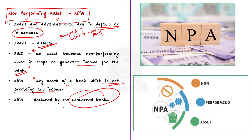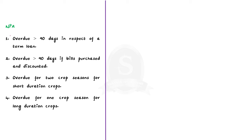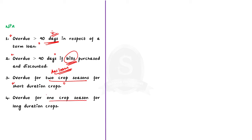As per the RBI, a non-performing asset is a loan where interest or installment of principal remains overdue for a period of more than 90 days in respect of term loans. Bills remaining overdue for a period of more than 90 days in case of bills being purchased or discounted. Any amount is said to be overdue if it is not paid on the due date fixed by the bank. The installment of principal or interest remains overdue for two crop seasons for short duration crops, and for one crop season for long duration crops — the last two parameters being with respect to agricultural loans.